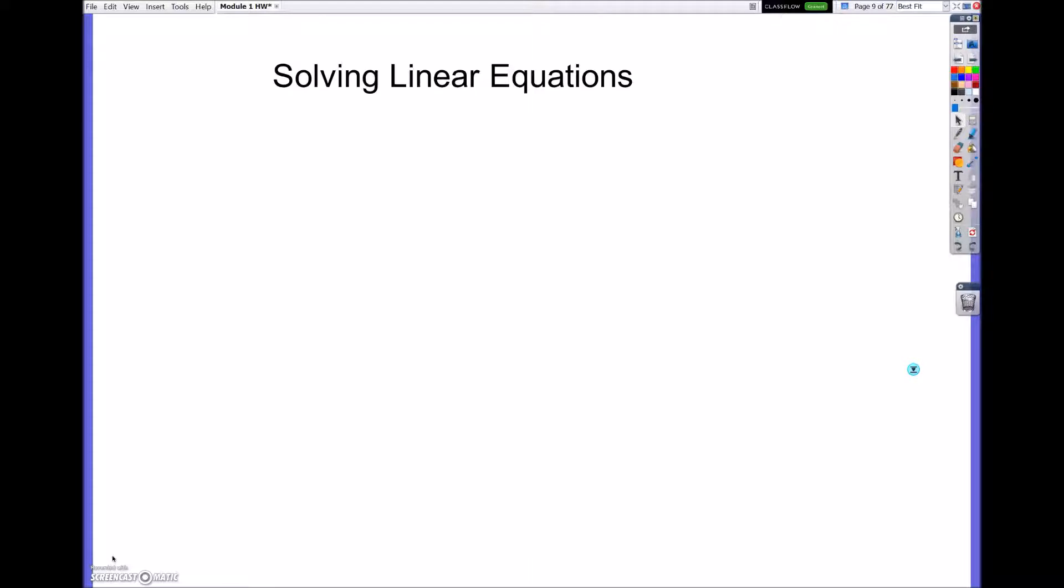So what we're going to be doing is looking at linear equations. Remember, since it's an equation, there's actually going to be an equal sign. So one of the most basic types, if I had something like x plus 1 equals 10, what this is saying is some mystery number plus 1 equals 10. Now we're probably going to be able to figure that out in our heads that the answer is 9, but mathematically what we want to do is isolate x. So what we would do on both sides is minus 1 to get x equals 9.